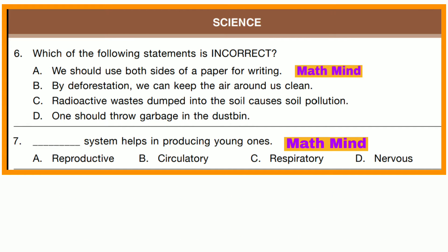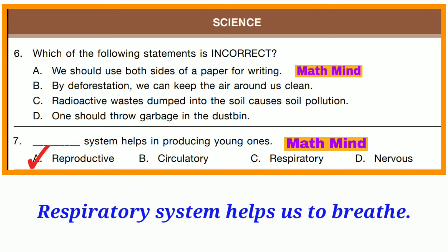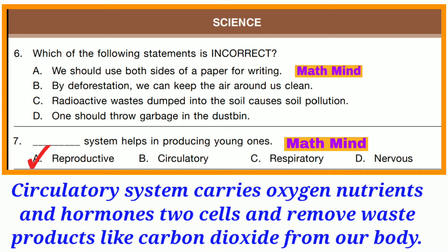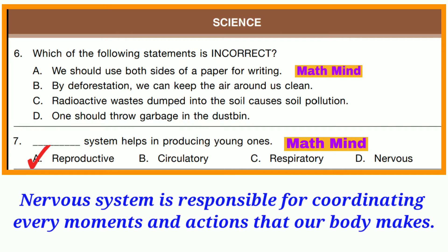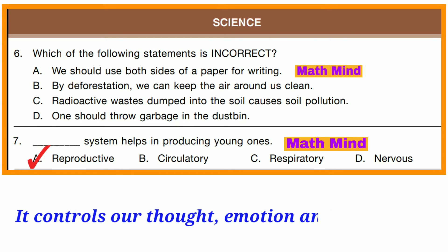Question number 7. Which system helps in producing young ones? Correct answer is A: Reproductive system. We know that the respiratory system helps us to breathe. The circulatory system carries oxygen, nutrients, and hormones to cells and removes waste products like carbon dioxide from our body. The nervous system is responsible for coordinating every movement and action that our body makes, even controlling our thoughts, emotions, and memories.